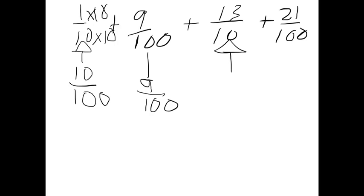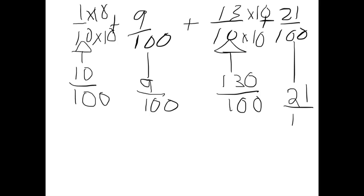And this one times 10 is 100, and this one times 10 is 130. So that's 130/100. That's an improper fraction because 130 doesn't fit in 100. Then we're going to solve that one, and this one stays the same, 21 out of 100.